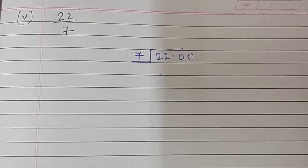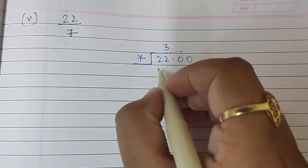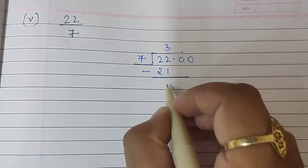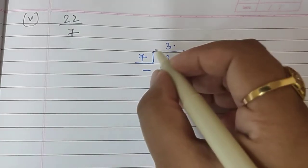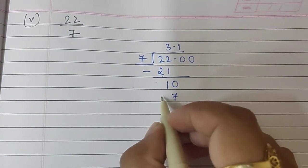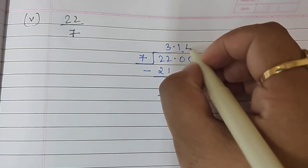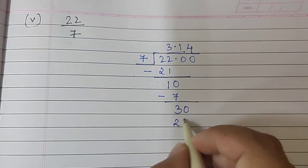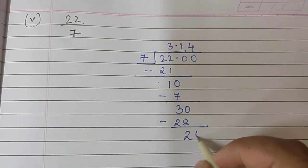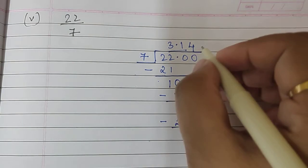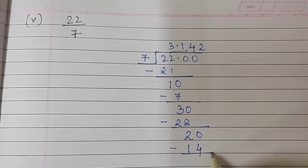Sum number 5 is 22 upon 7. Now, 7, 3's are 21. Remaining is 1. We will put a decimal sign on top and bring the 0 down. 7, 1's are 7. Remaining 3. Bring the 0 down. 7, 4's are 28. Minus remains 2. We can put another 0 as we want. And we can write 7, 2's are 14. And remaining is 6.